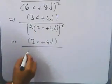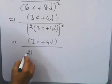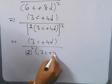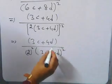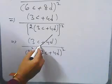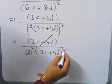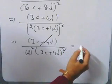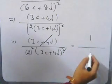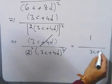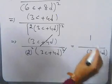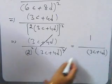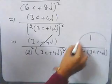Writing (3c + 4d) separately, it cancels with the numerator factor. After cancellation you get 3c + 4d to the power 1 in the numerator and 4 in the denominator, so the result is (3c + 4d) / 4.